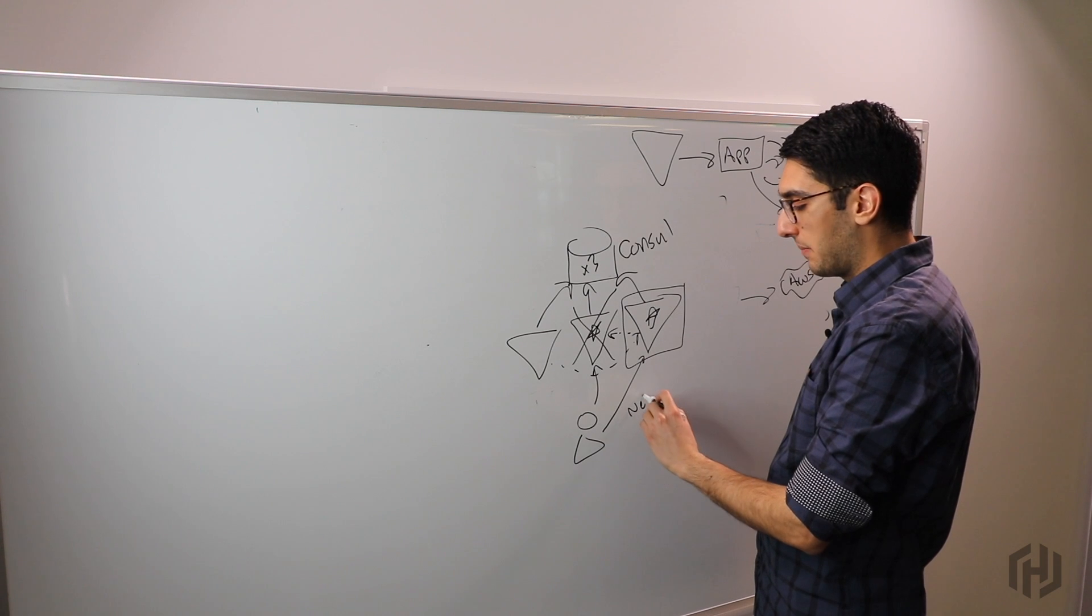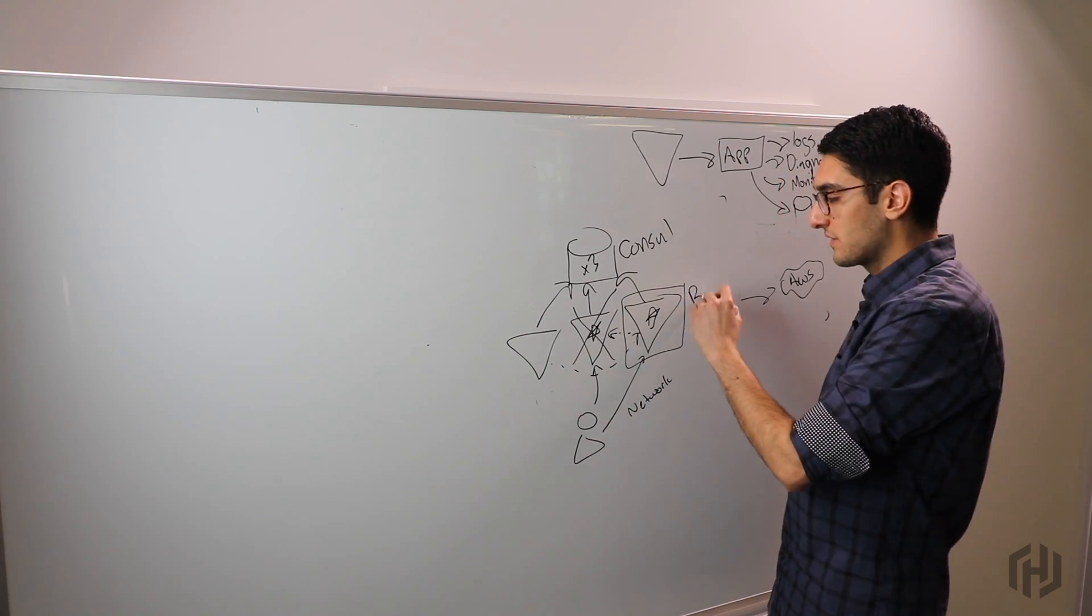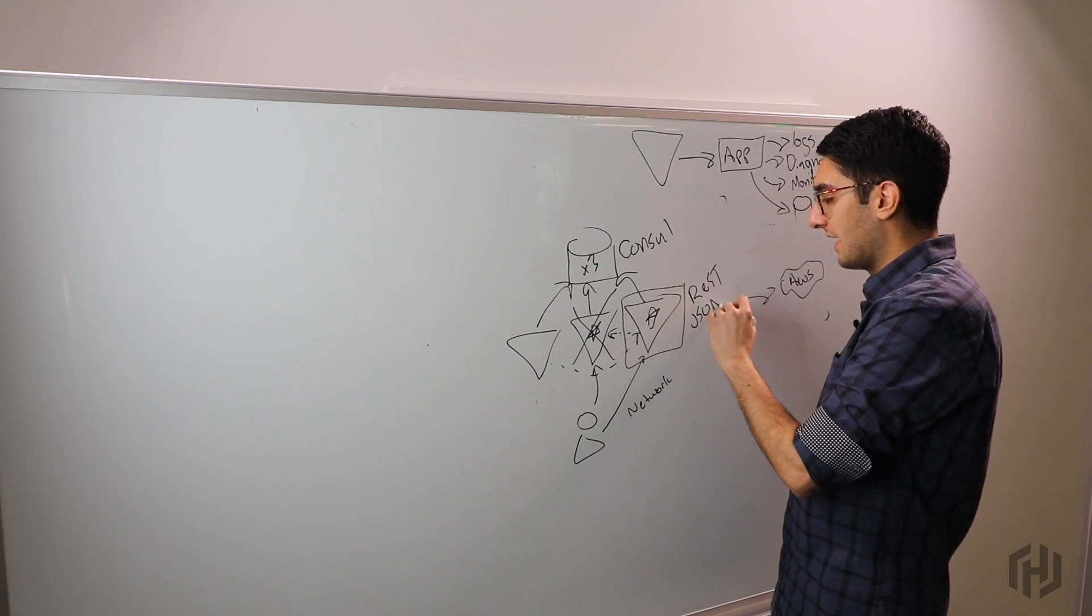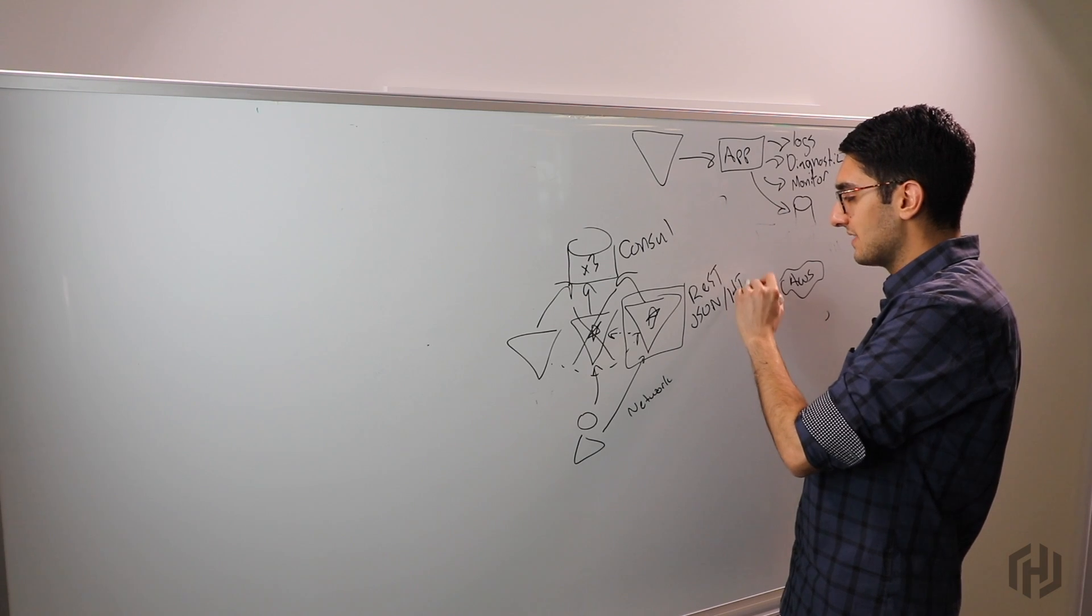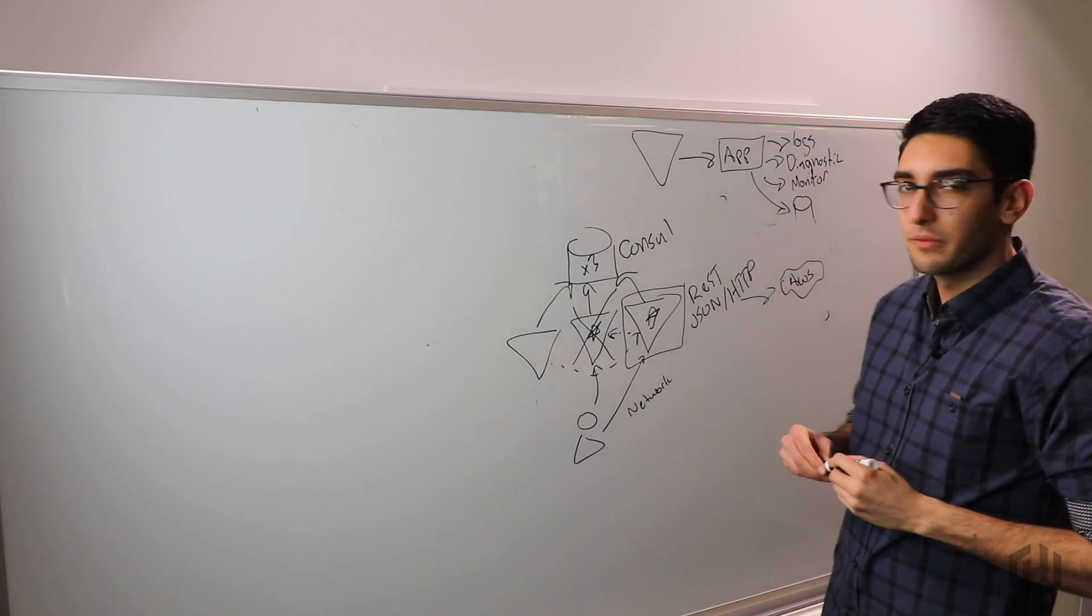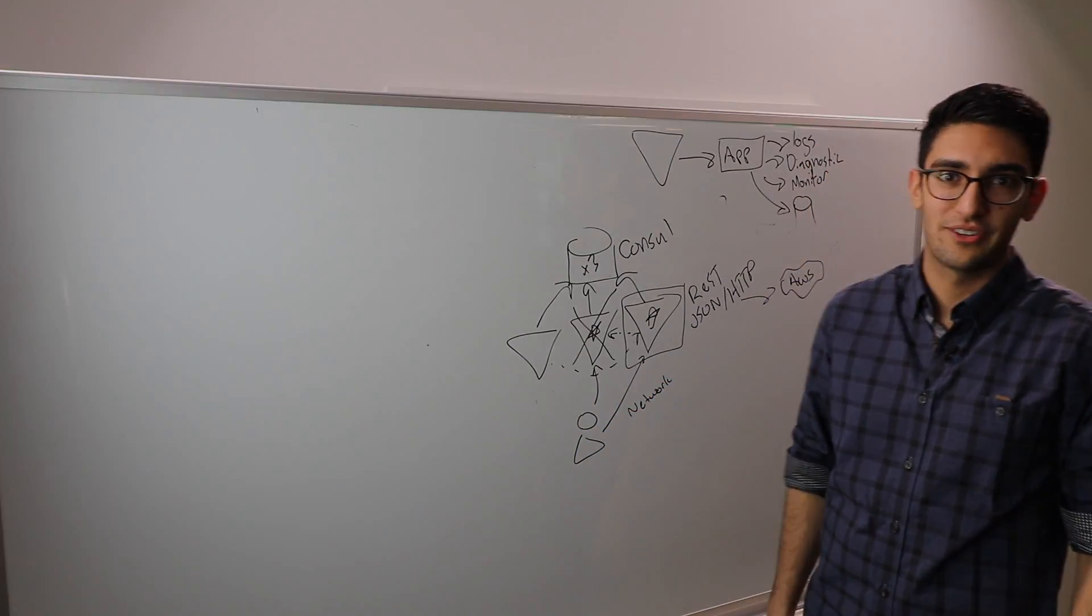This is what Vault looks like at a high level. It operates as a shared network service and we're talking to it just as an API client over the network. What Vault typically exposes is a RESTful JSON API, so it's JSON over HTTP, making it relatively easy to integrate with our applications. I hope this was useful as a high-level introduction to Vault, and please check out our other resources to learn more. Thank you.